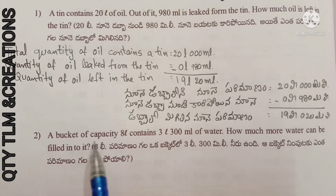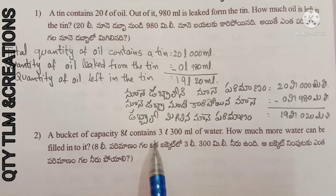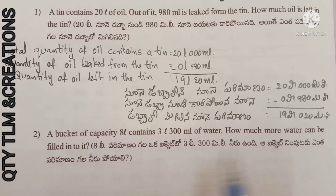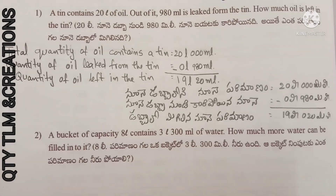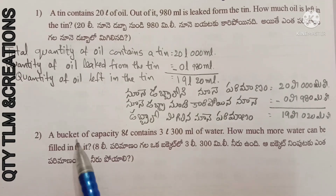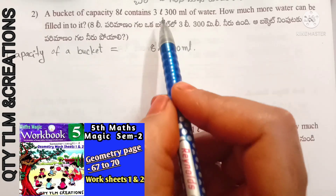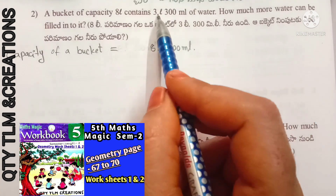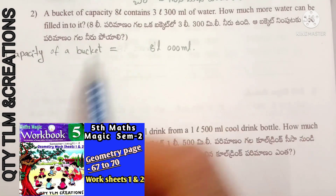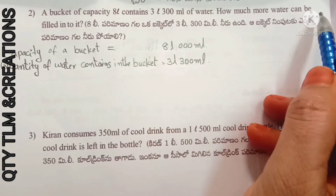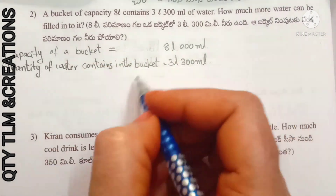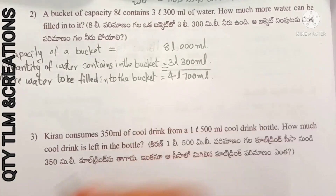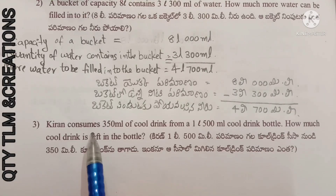Next question: a bucket of capacity 8 liters contains 3 liters 300 milliliters of water. How much more water can be filled into it? Capacity of the bucket equals 8 liters. Quantity of water contained in the bucket equals 3 liters 300 milliliters. More water to be filled into the bucket equals 4 liters 700 milliliters.